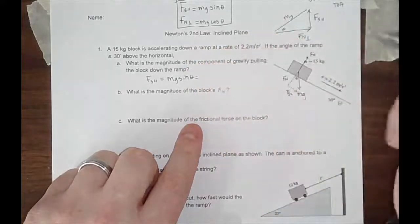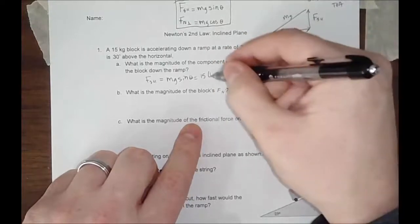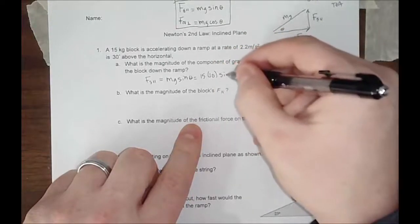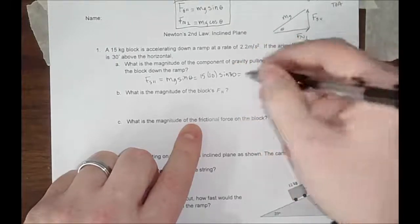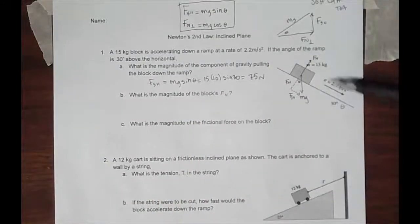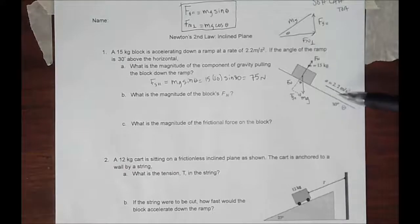MG sine of theta. The mass is 15 of the block. I'm going to use gravity as 10 because it's nice and easy when you do some calculations. And the sine of 30. That actually gives you 75 newtons. That is how much force is being vectored down this ramp.